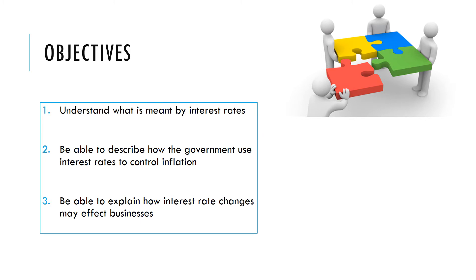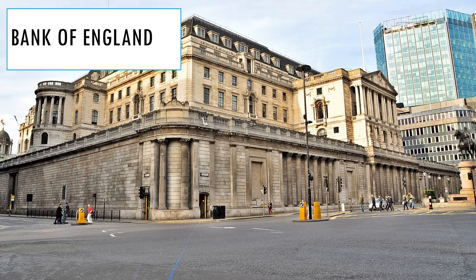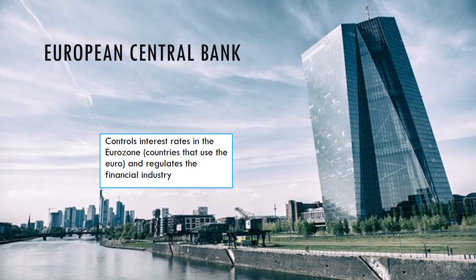Now let's look at how the government use interest rates to control inflation. Well, it's not really the government — it's the state, and in particular the Bank of England. The Bank of England controls interest rates in the UK and also regulates the financial industry, making sure all the banks run smoothly. In Europe, the equivalent body is called the European Central Bank, and they control interest rates in the eurozone — the countries that use the euro.